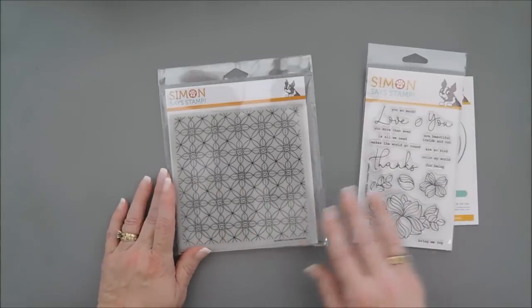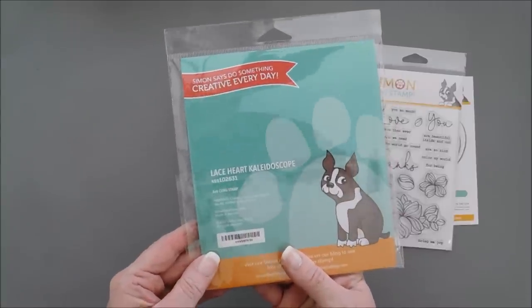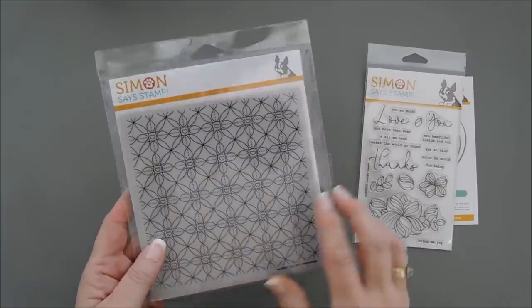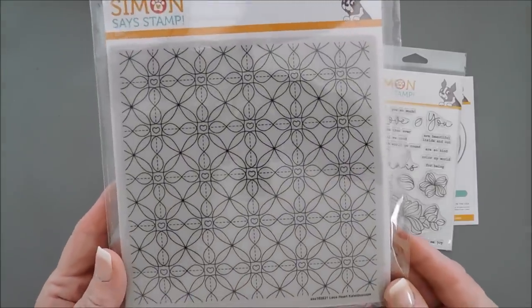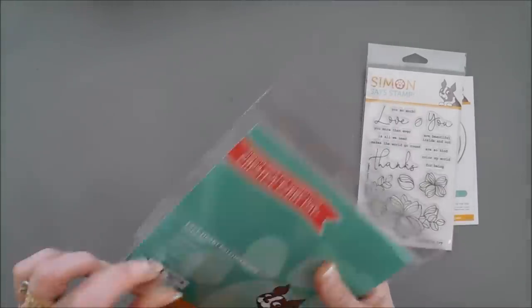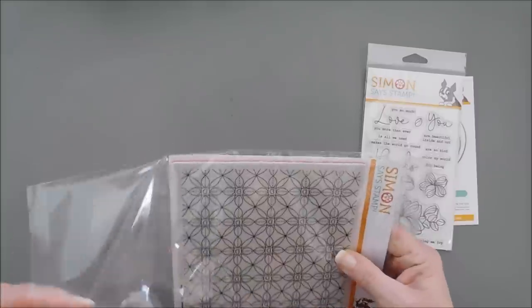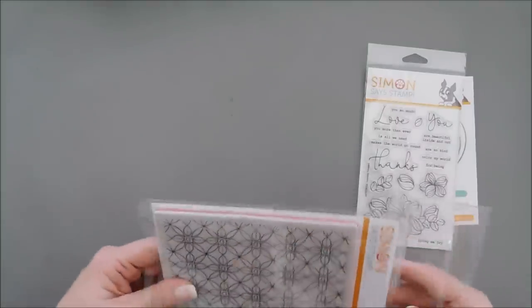And then for my background, there's a new background stamp called Lace Heart Kaleidoscope. We're going to be using this for our background. This is such a pretty background stamp. Let's jump in, and first we will create our backgrounds.